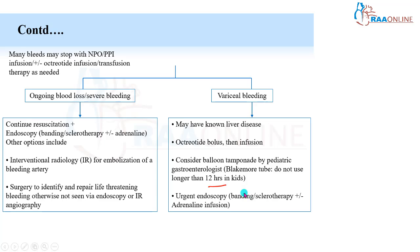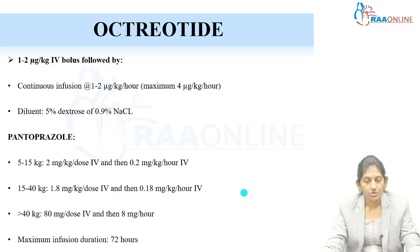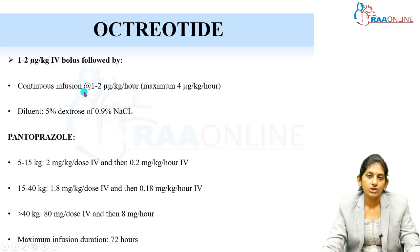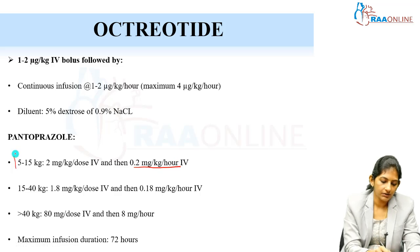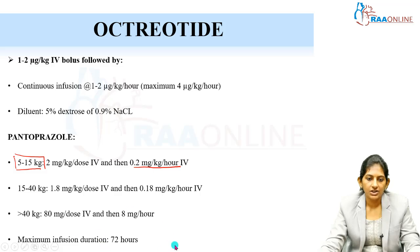The dose for octreotide infusion: give 1–2 mcg/kg IV bolus, then follow with a continuous infusion at 1–2 mcg/kg per hour; this can be continued for 24–48 hours, with a maximum of 4 mcg/kg per hour. Dilute octreotide in half DNS. For pantoprazole (PPI): for a 5–15 kg child, the initial bolus is 2 mg/kg per dose IV, then IV infusion at 0.2 mg/kg per hour. Maximum duration for pantoprazole is 72 hours; most UGI bleeds will be controlled by 24–48 hours.